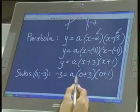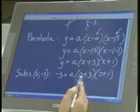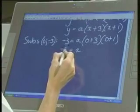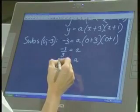That's negative 3 equals a into 0 plus 3 and 0 plus 1. Simplifying this gives us 3 and 1. So I get a equals negative 3 divided by 3. So a is negative 1.